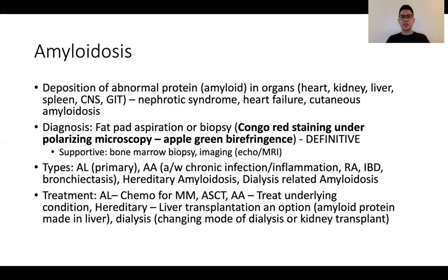Either a fat-pad aspiration biopsy or biopsy of involved tissue such as the kidneys can be performed. Other supportive imaging includes echo or MRI of the heart if there is suggestion of cardiac involvement. Of note, there are various kinds of amyloidosis, but in the PACES context, we often encounter AA amyloidosis, which is a secondary amyloidosis caused by an underlying inflammatory disorder — things like chronic infections, tuberculosis, chronic inflammation in rheumatological disorders, IBD, or bronchiectasis.